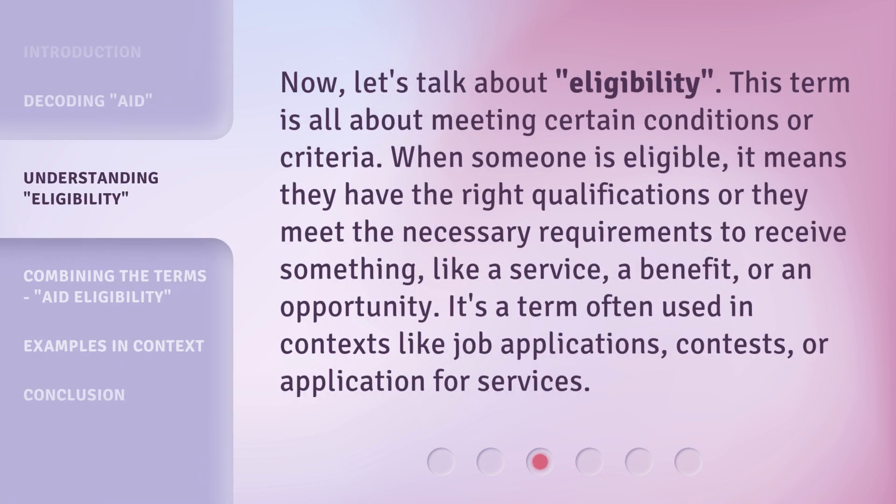Now, let's talk about eligibility. This term is all about meeting certain conditions or criteria. When someone is eligible, it means they have the right qualifications or they meet the necessary requirements to receive something, like a service, a benefit, or an opportunity. It's a term often used in contexts like job applications, contests, or applications for services.